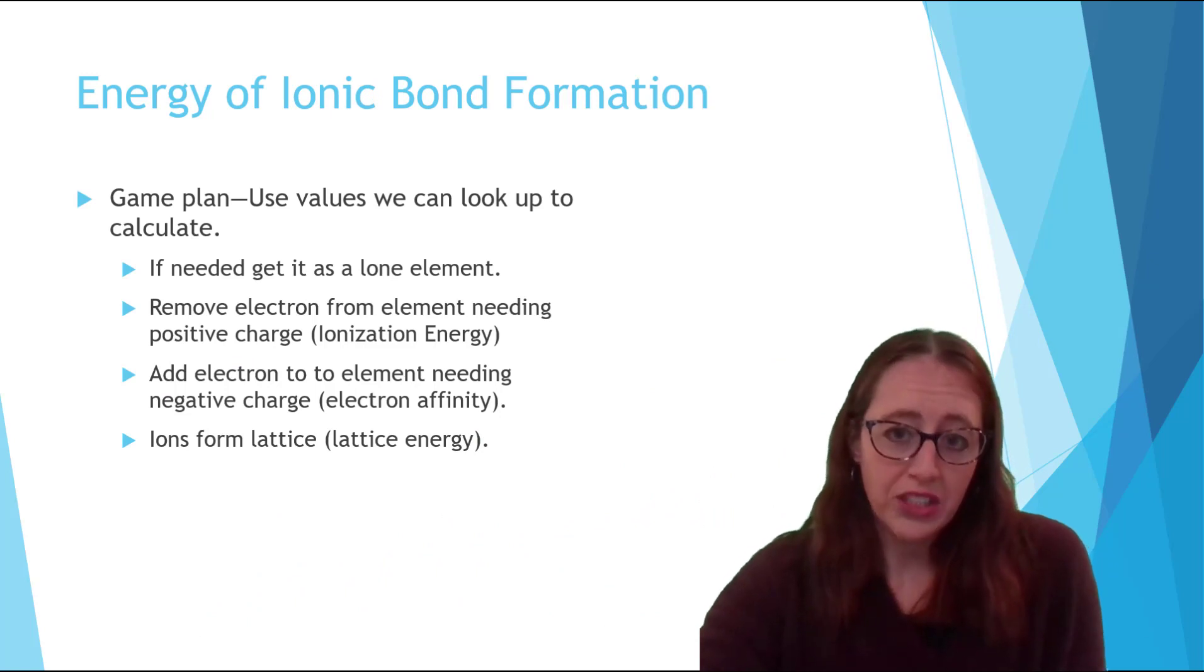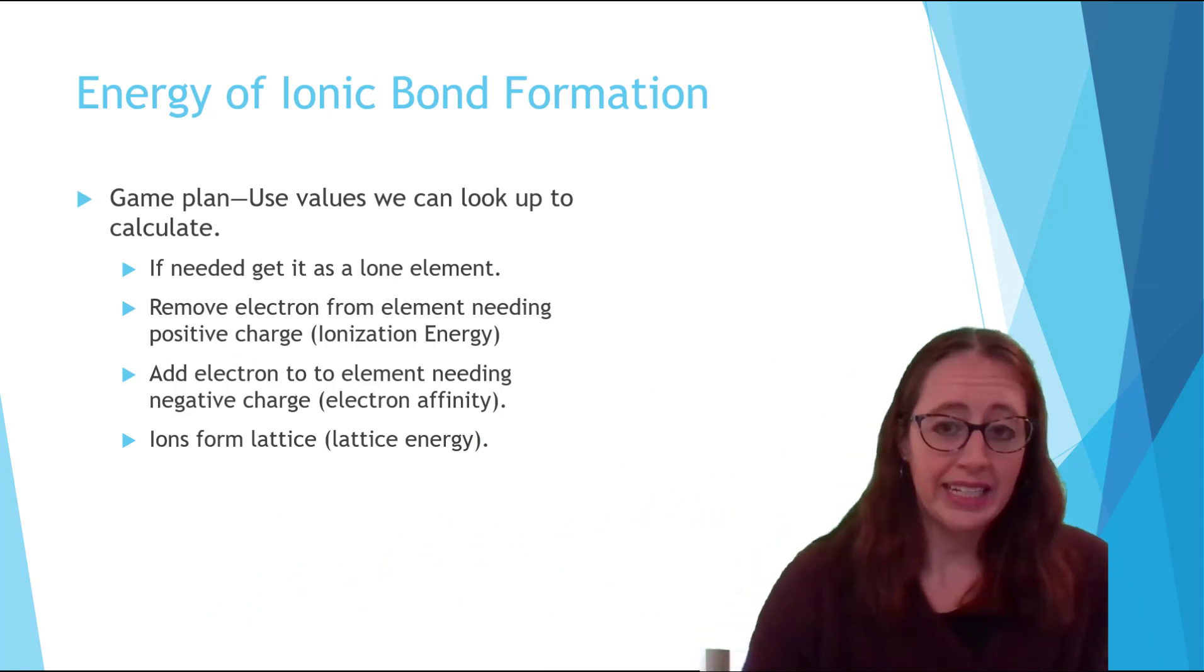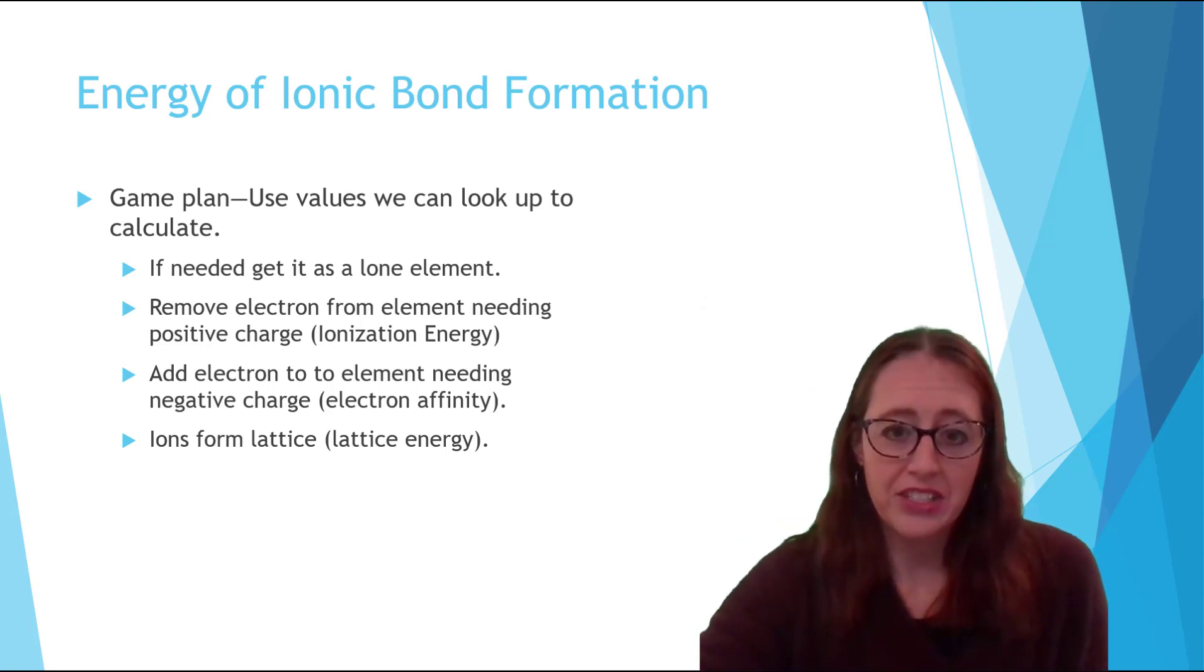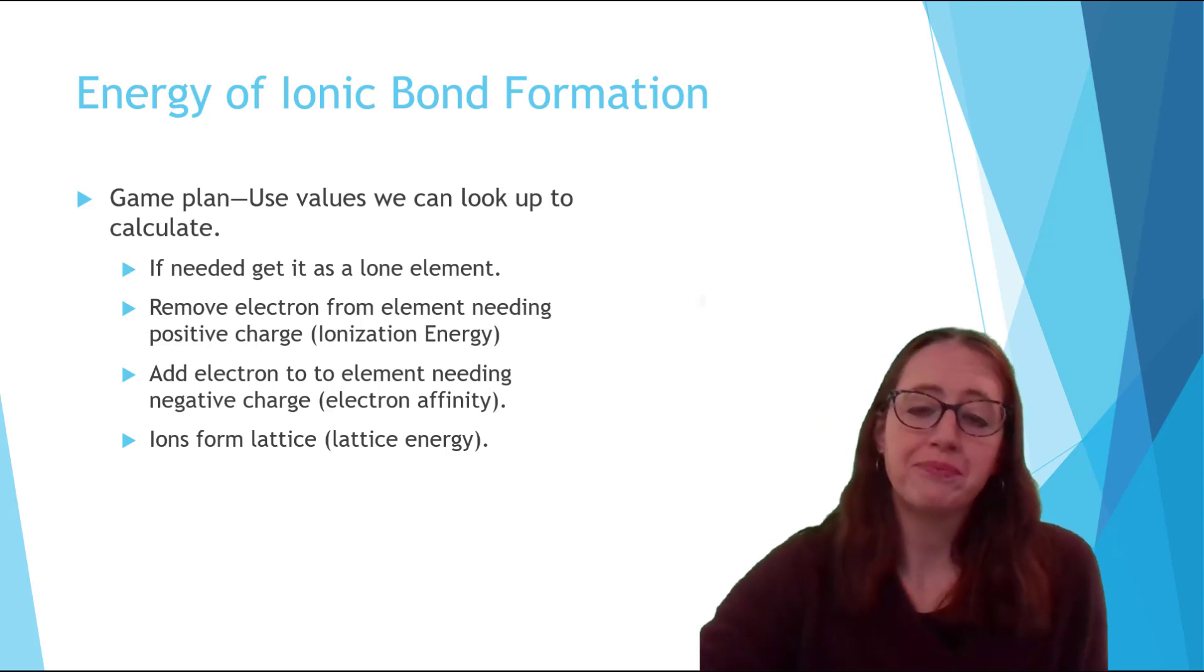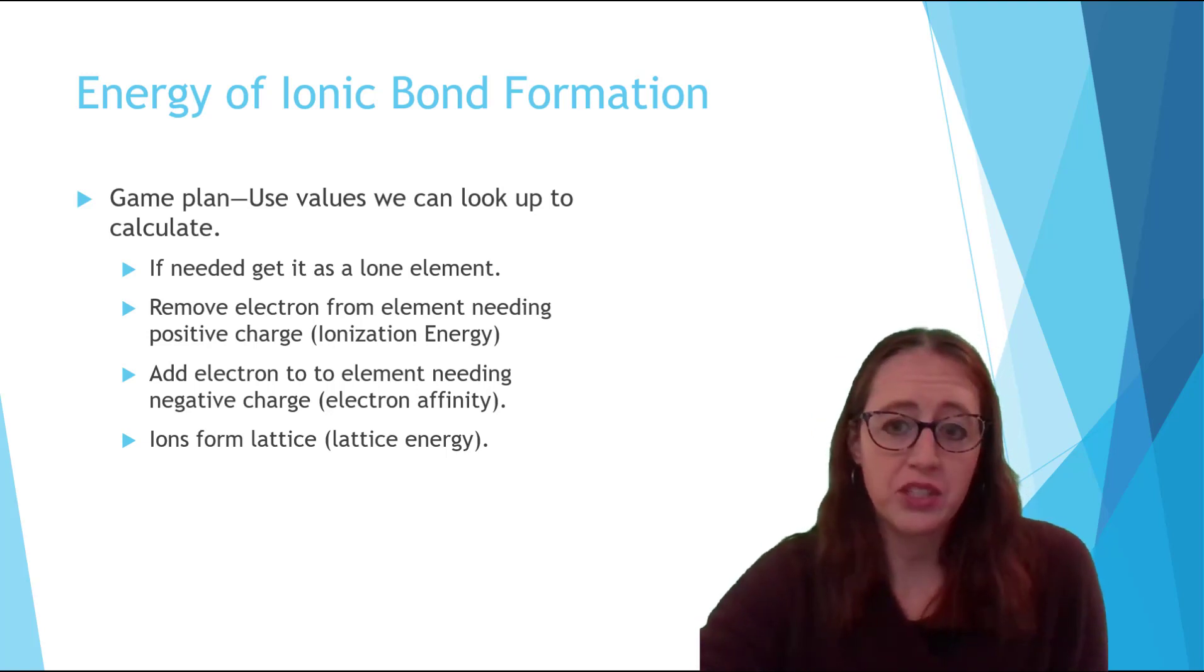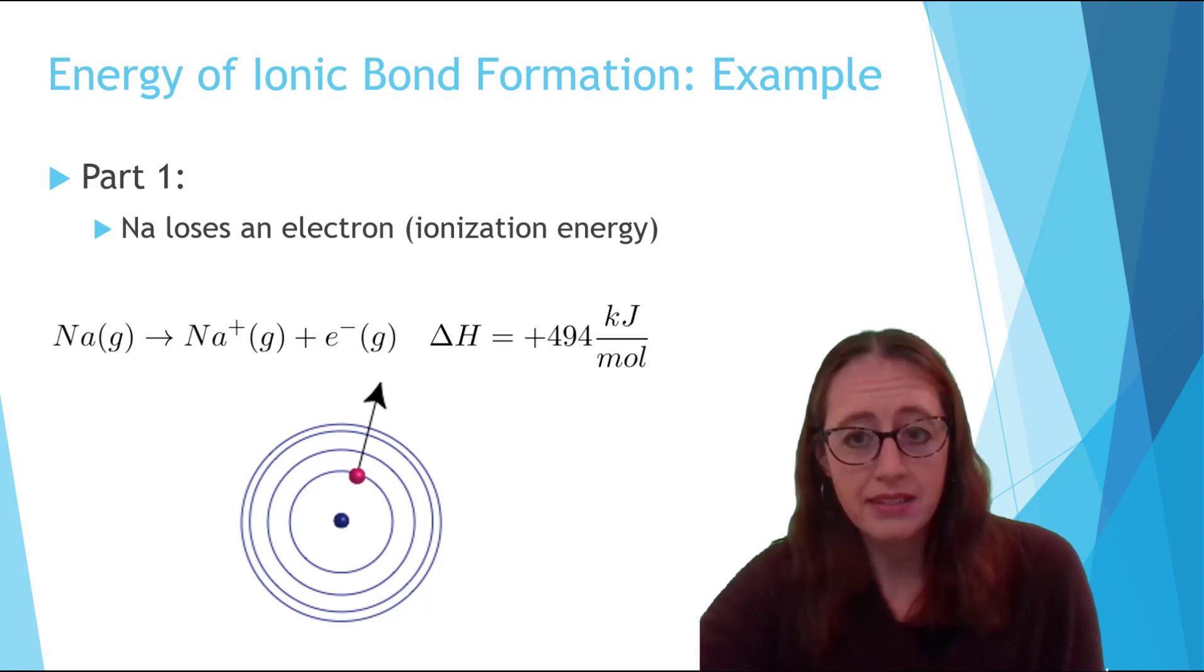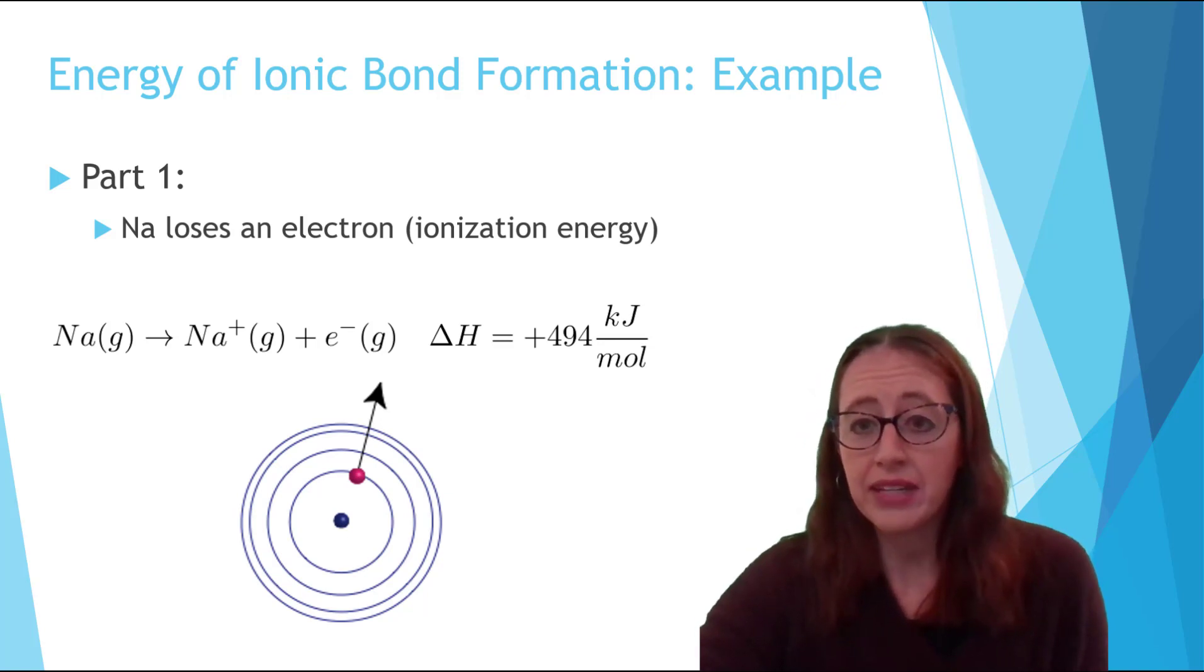This involves using electron affinity or gaining an electron, ionization energy or losing an electron, lattice energy, and if necessary the enthalpy required to get to a single element. Now let's zoom in on each one of these steps. We'll use sodium chloride as our example. The three parts include first ionizing from Na to Na+, then giving an electron to chlorine to form chlorine minus, and then seeing how much energy comes from the plus and minus attracting each other.